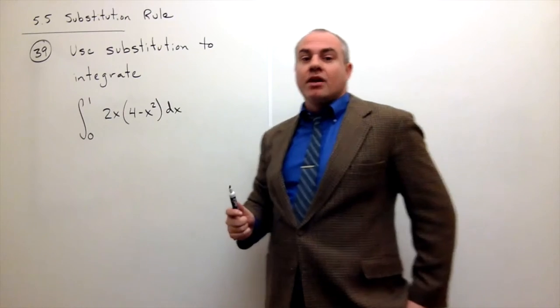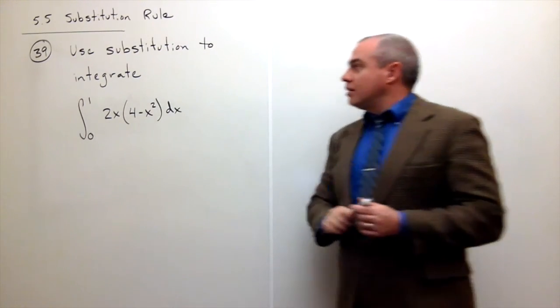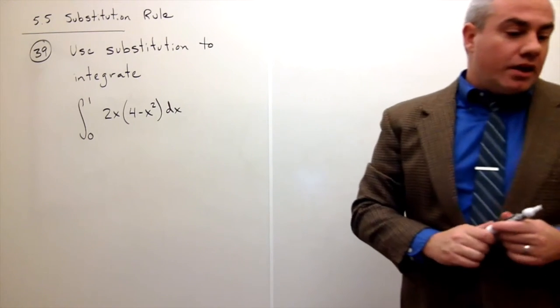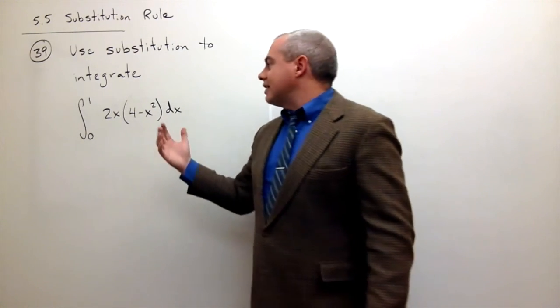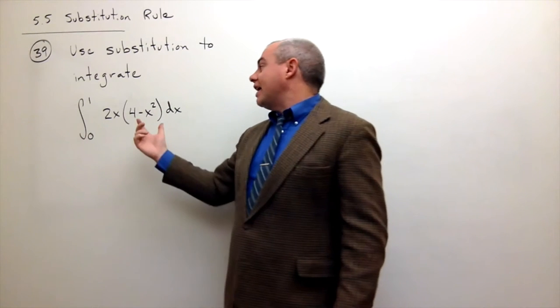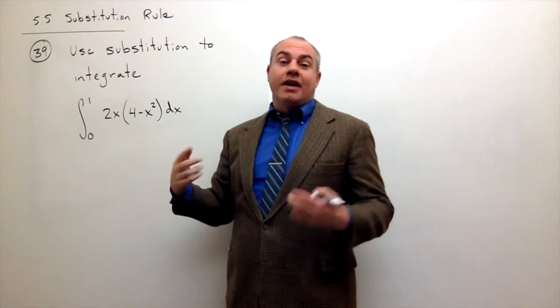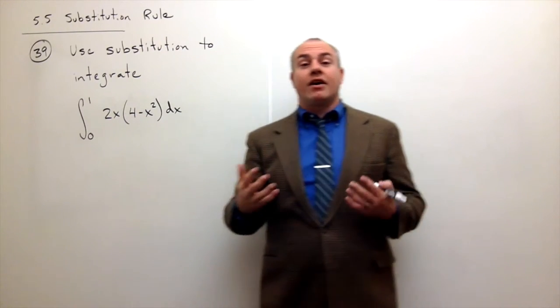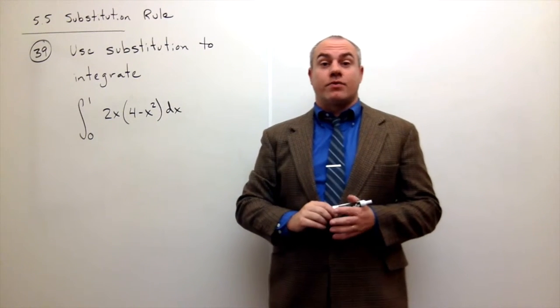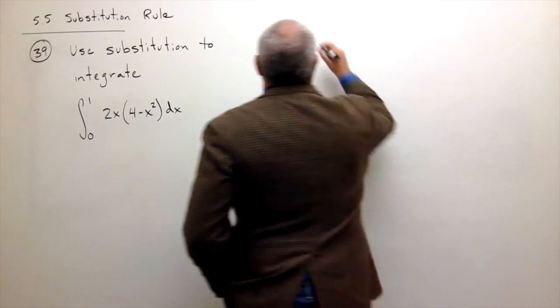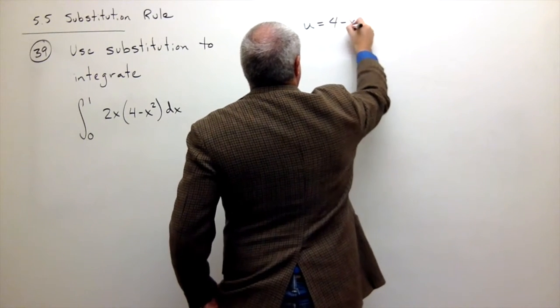So how should we do this? Well first thing, let's look at this and see if there is an obvious u-substitution. Now, this is kind of silly in some ways because I could just as easily multiply this thing out and then take its antiderivative. But for the sake of practice, let's use a u-substitution here for our 4 minus x squared.